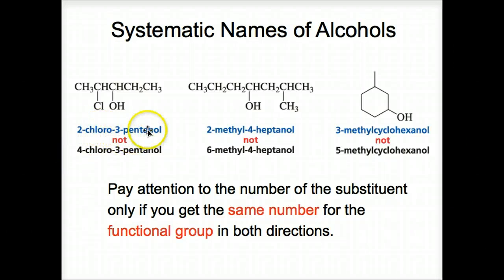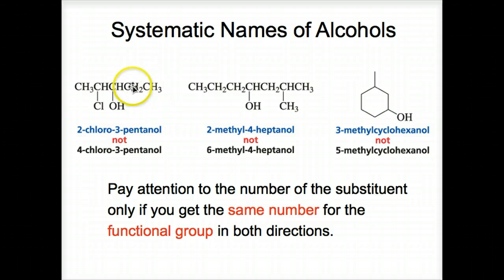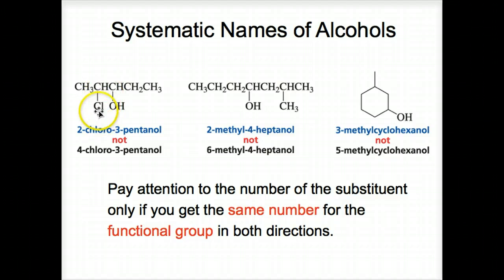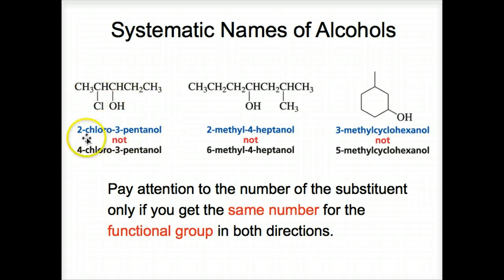Pay attention to the substituent number only when the same position number is obtained for the functional group in both directions. Here's 2-chloro-3-pentanol: the OH can be on three from either direction, but we number from left to right to get the lowest number on chlorine — so it's 2-chloro-3-pentanol, not 4-chloro. Two other examples show the same principle.